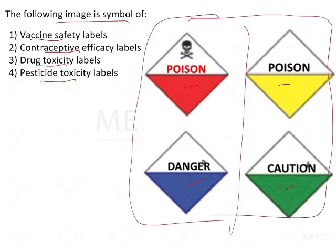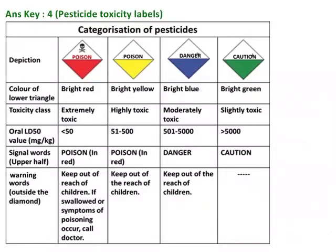If you know this symbol, you can easily solve the question within 10 to 20 seconds — it's pesticide toxicity level. Basically, they categorize pesticide materials into four categories depending on LD50, which gives the toxicity level — whether it is extreme, high, moderate, or slight.